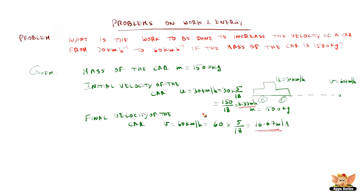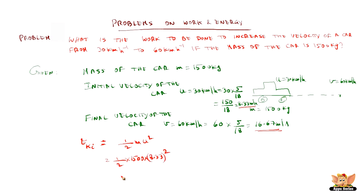Now we know u and v and can find the kinetic energy. The work done to increase the velocity is equal to the change in kinetic energy. Let us find the initial kinetic energy, Eki. The initial kinetic energy is half m u squared, which is half into 1500 into 8.33 squared. On calculation, we get 52041.68 joules as the initial kinetic energy.